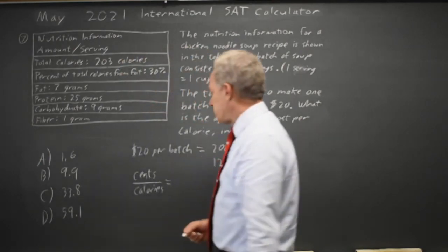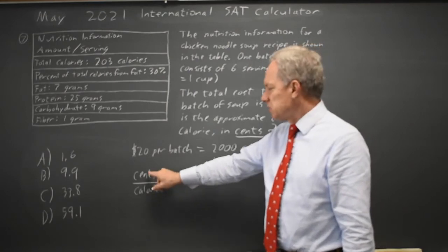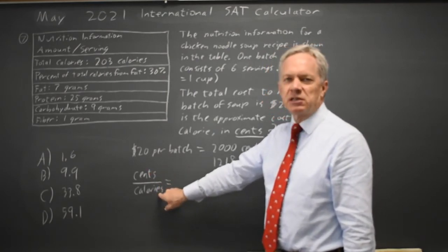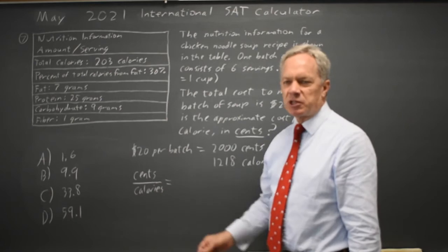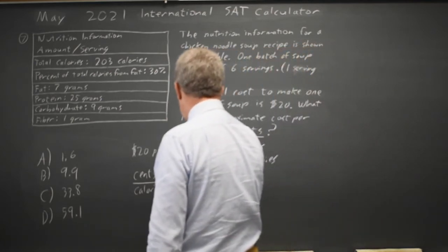Per means divide when you're translating to mathematical symbols, so cents per calorie means you take the number of cents and divide by the number of calories. So that would be 2,000 over 1,218.